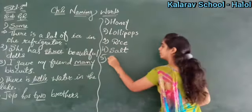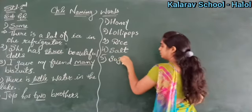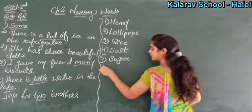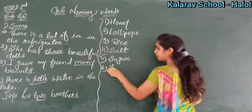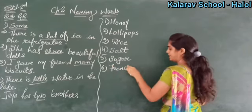Fifth number is sugar. And last, number six, is French fries.